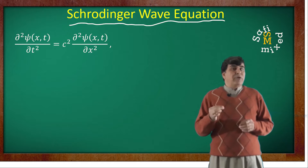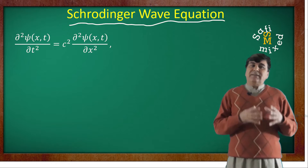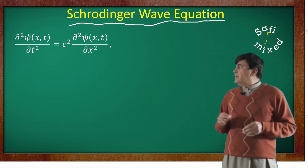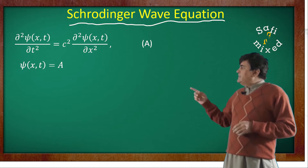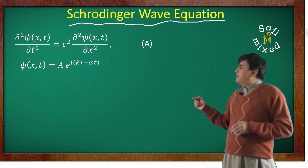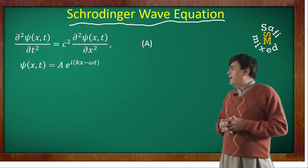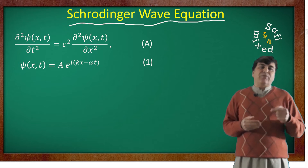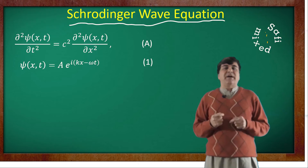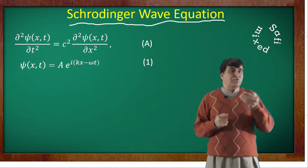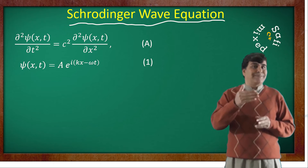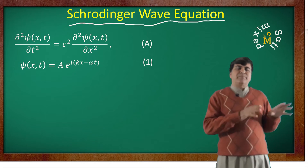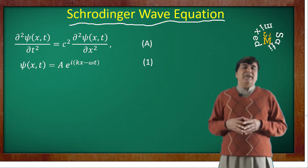We know from our courses on electromagnetic theory that this equation satisfies a plane wave solution of the form: psi of X and T equals A times exponent of iota times (KX minus Omega T) — equation 1. You can verify this by substituting equation 1 into equation A and confirming that the two sides agree. I'm sure you are all well familiar with this solution from your previous courses.